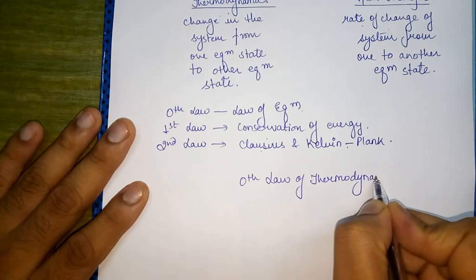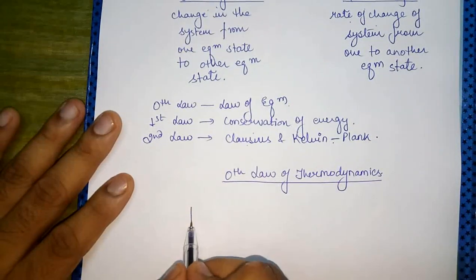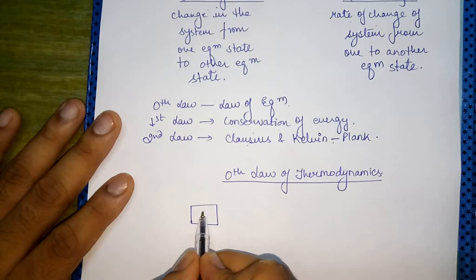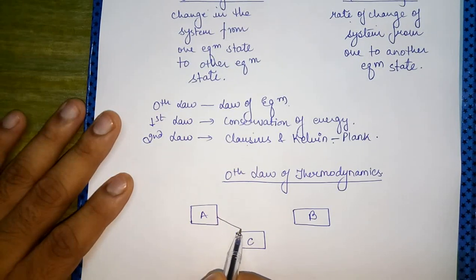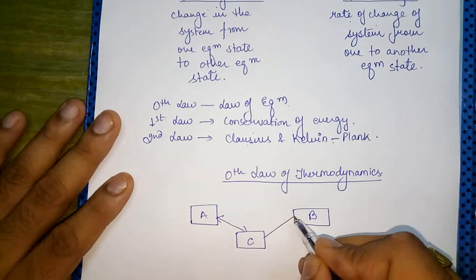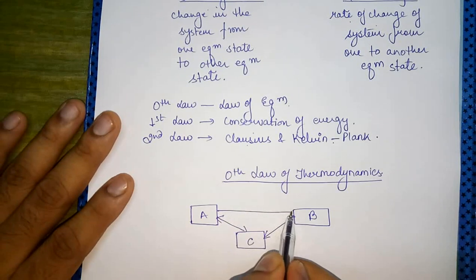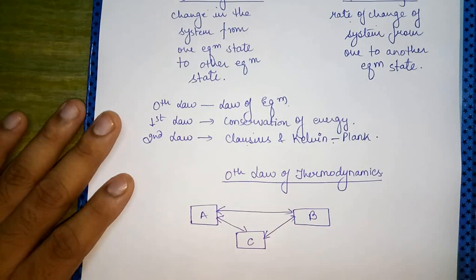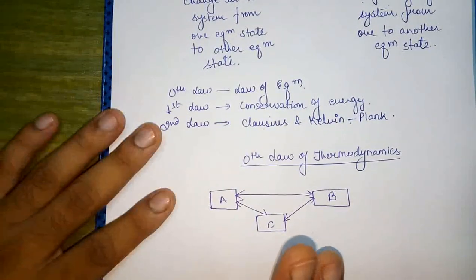The zeroth law of thermodynamics states that if there are three bodies A, B, and C — if A and C are in thermal equilibrium with each other, and B and C are also in thermal equilibrium with each other, then A and B will also be in thermal equilibrium with each other.